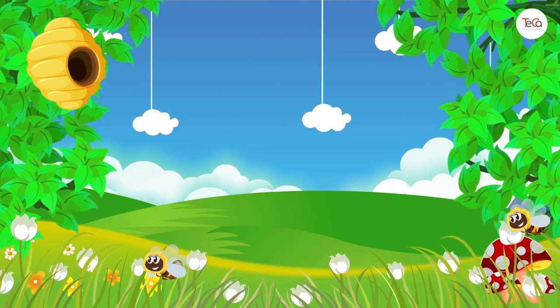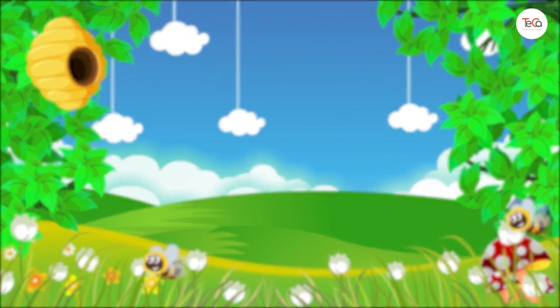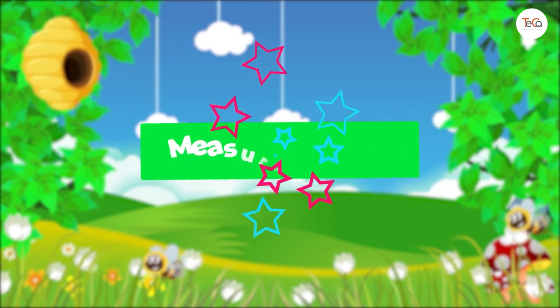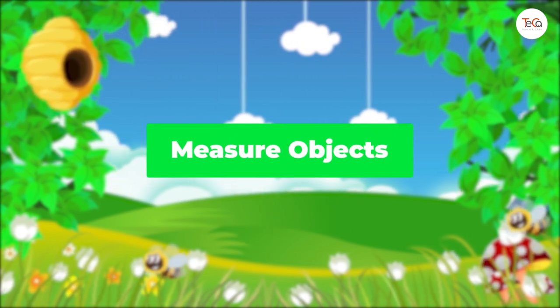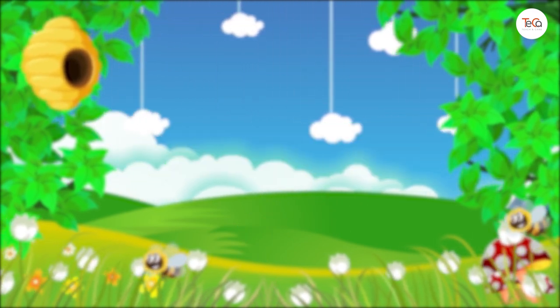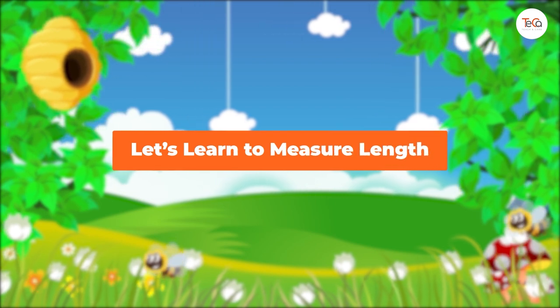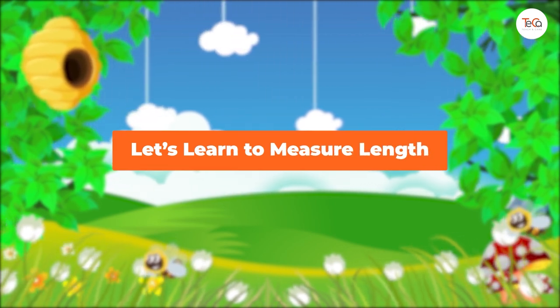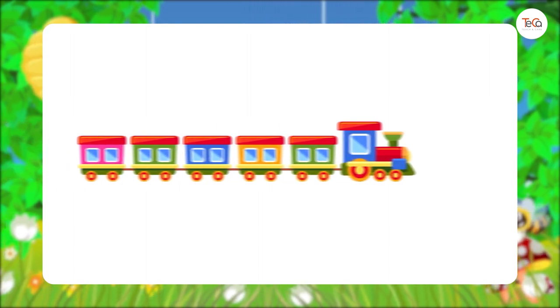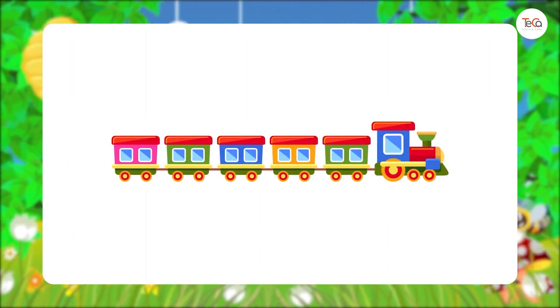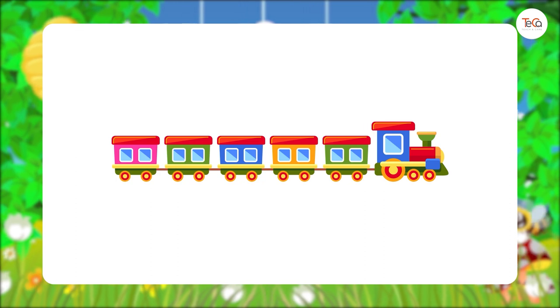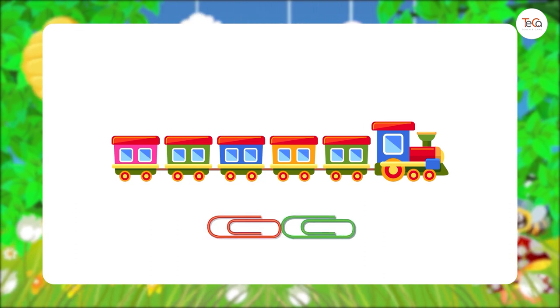Now, in the next part, we will learn how to measure objects. First, let's learn to measure length. Here we have a toy train. We can measure the length of the train by using paperclips. Remember to use paperclips of the same size. Don't use paperclips of different sizes.